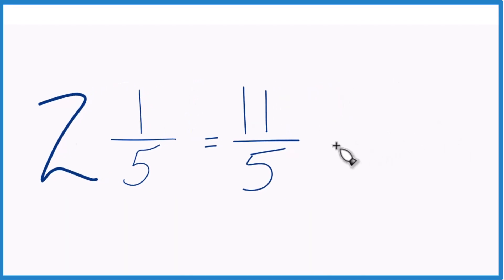You can even check your work, because 5 goes into 10 twice with 1 left over. Bring the denominator across, 2 and 1 fifth.